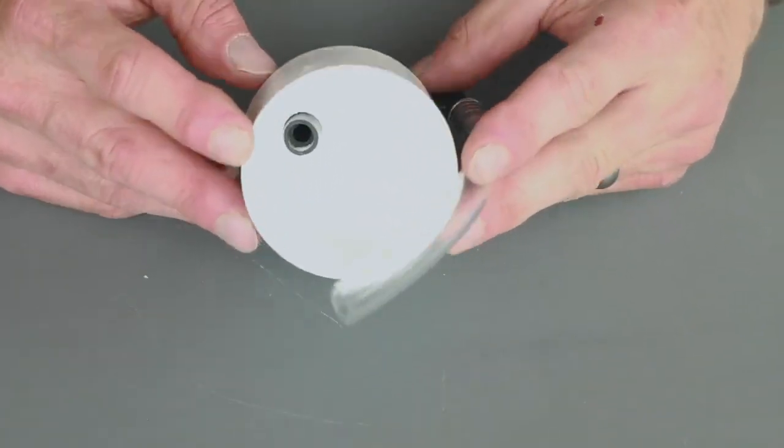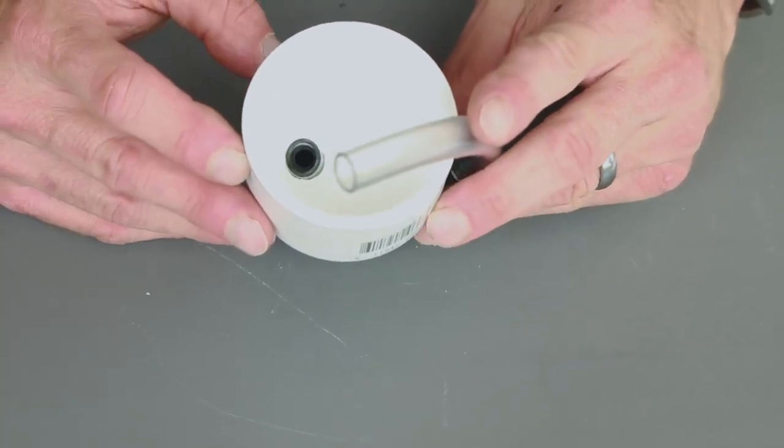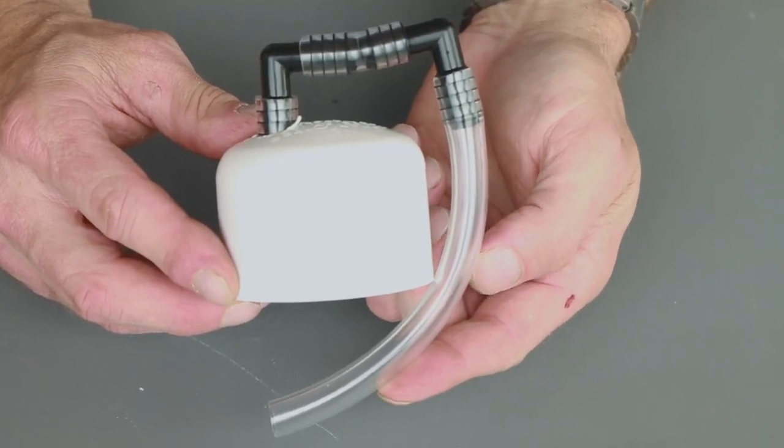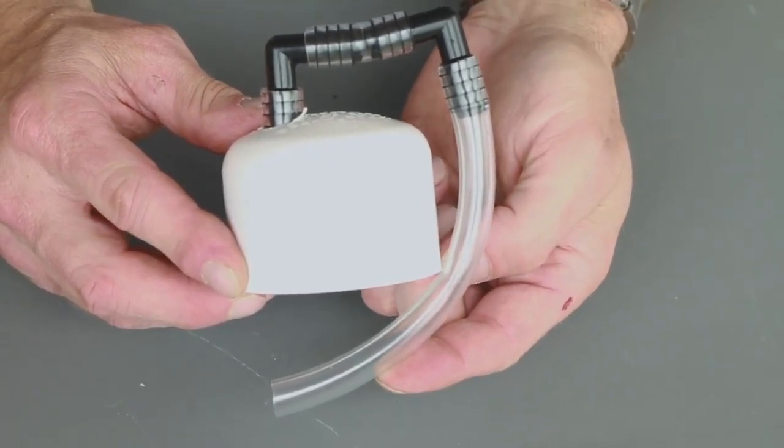Orient the assembly so that the 1 and a half inch hose connecting the 2 90 degree barbed elbows goes across the top of the cap, and the 6 inch hose hangs down on the opposite side.